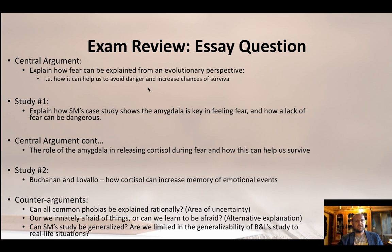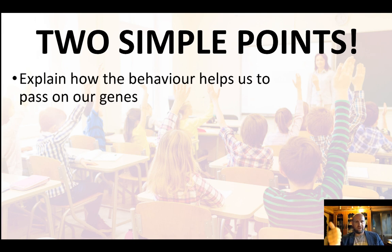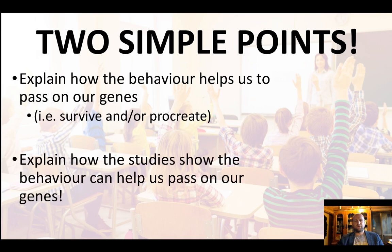If you could cover all of that in about 900 to 1000 words, that would be pretty awesome. If you feel a little overwhelmed, just remember these two simple points: number one, explain how the behavior helps us to pass on our genes — as long as you can do that, you're giving an evolutionary explanation. Number two, explain how the studies show that the behavior can help us pass on our genes, either through survival or procreation. Describe the studies and explain that link, and you're doing fantastic.